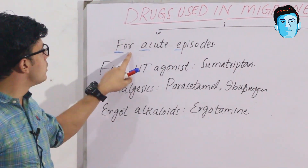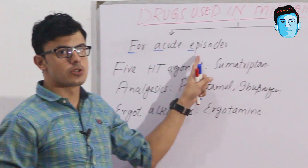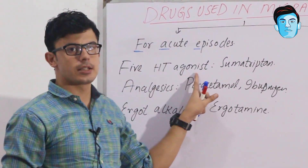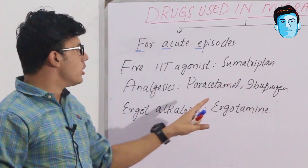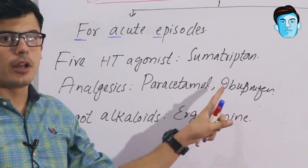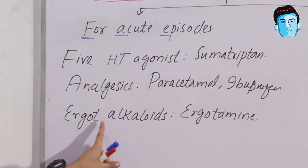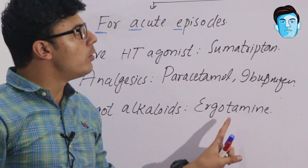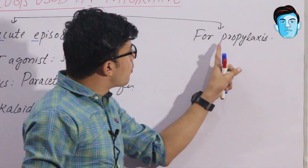To summarize the drugs used in acute episodes: F stands for 5-hydroxytryptamine agonist including sumatriptan; A stands for analgesics including paracetamol and ibuprofen; and E stands for ergot alkaloids, that is ergotamine. Now let's switch toward the prophylaxis of migraine.